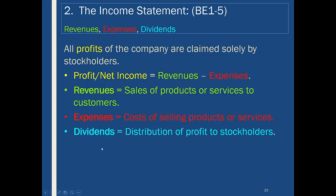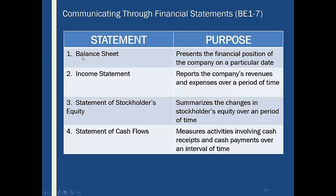Dividends are what get distributed as profits to stockholders. Here's an overview: the balance sheet shows assets, liabilities, and equity; the income statement shows revenues and expenses; stockholders' equity summarizes equity over a period of time. The statement of cash flows shows us where cash came into the company and where it went — whether from selling coffee, getting a loan, or borrowing from the bank.